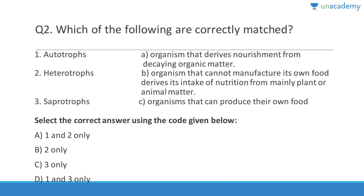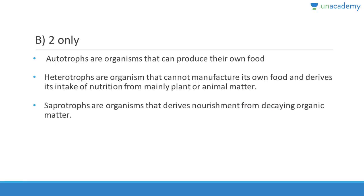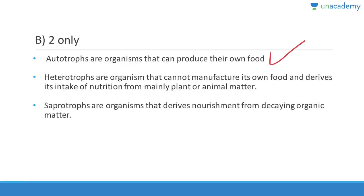Question two: Autotrophs are organisms that derive nutrition from taking organic matter — that is saprotrophs. So statement one is wrong. Heterotrophs are organisms that cannot manufacture their own food and derive their nutrition mainly from plants and animal matter — that is correct. The answer is B, two only. Autotrophs are organisms that can produce their own food.